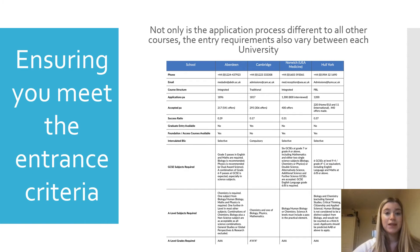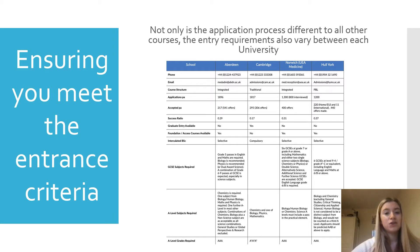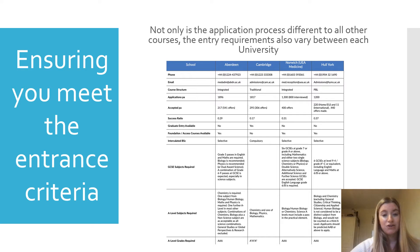One of the most important steps in the medicine application process is ensuring you meet the entrance criteria of all the schools you're applying to. Not only is the application process different to all other courses, the requirements also vary between each university. You only have four application choices on UCAS unlike other courses which have five, so a wasted choice is costly. There's a tool called the Medic Portal Medical School Comparison Table where you can compare requirements for GCSEs, A-levels and equivalents such as Scottish Highers and BTECs, and look at the entrance tests required — either the UKCAT or the BMAT.